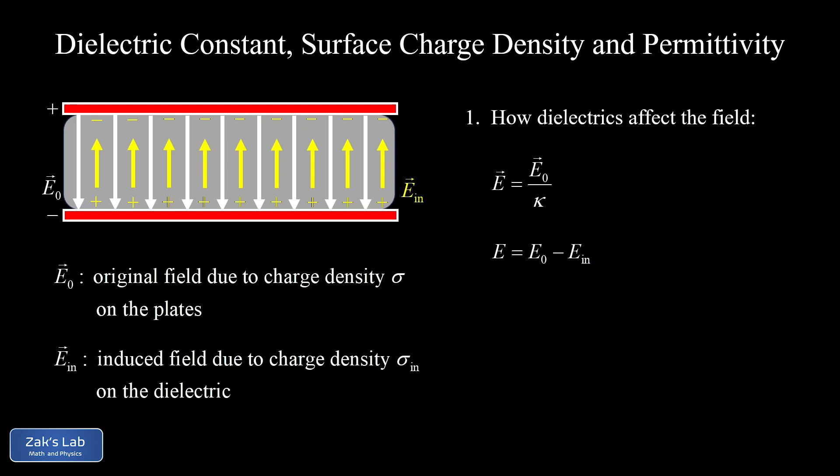Next, remember those electric fields are going to add vectorially between the plates. We have our original field pointing downward — that's E0 — and our induced field pointing upward. So their magnitudes subtract to give us the net electric field E. We can use the fact that the net electric field equals E0 divided by the dielectric constant, so we write E0 over kappa equals E0 minus E_induced.